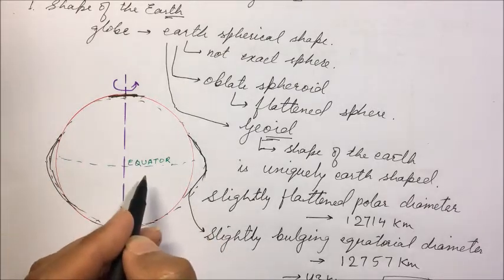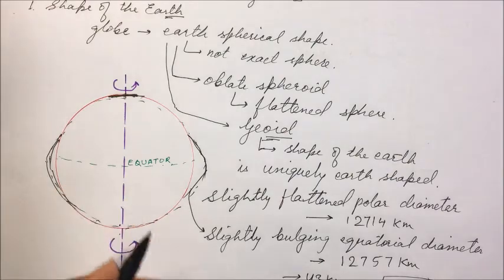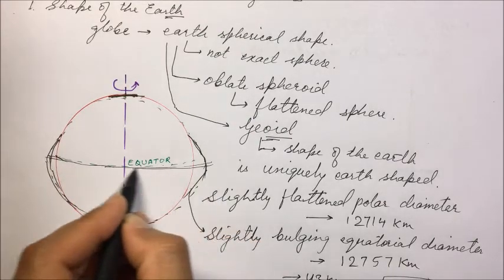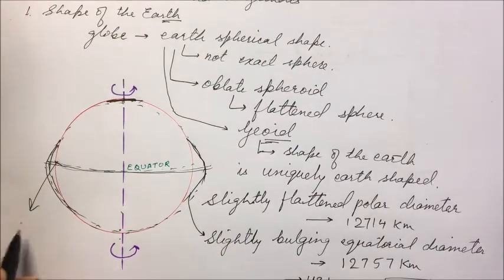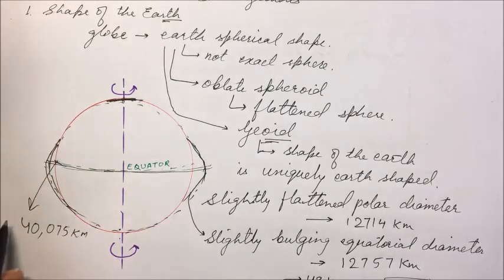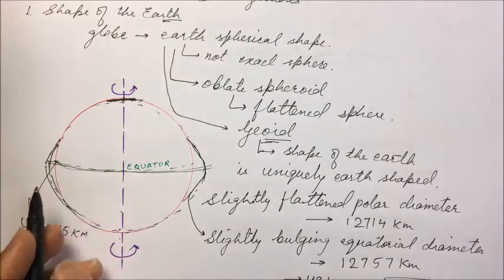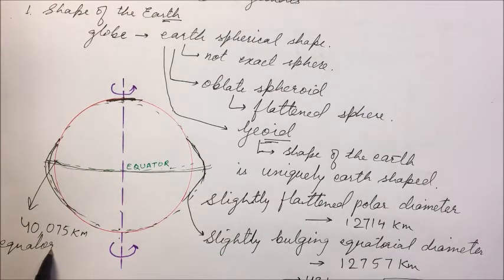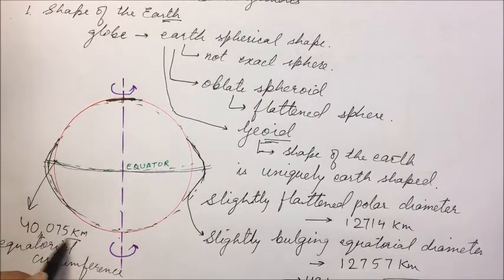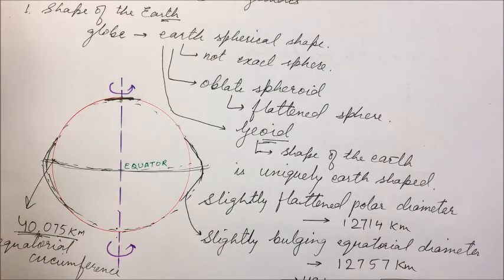Indeed, the earth is more nearly a perfect sphere than most spheres. For example, if you take a basketball and compare it with the earth's shape, the earth will be more perfect in comparison. The circumference around the equator is around 40,075 kilometers — we call this the equatorial circumference.